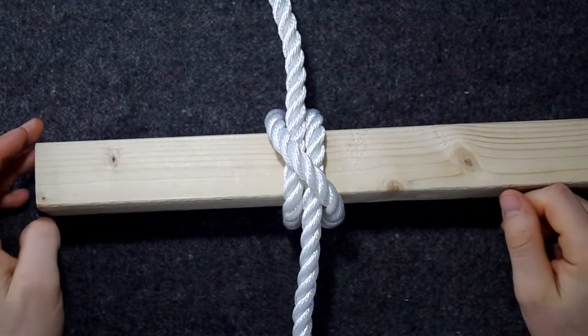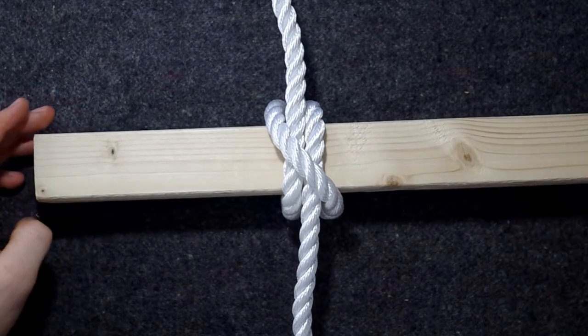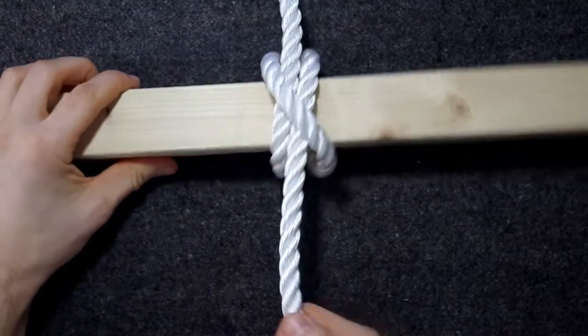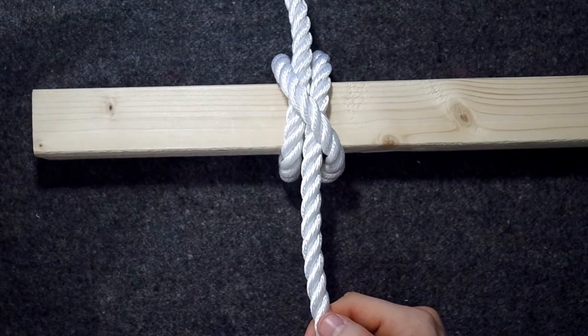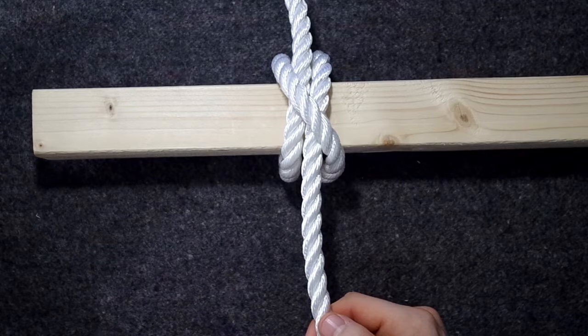It's useful for attaching ropes to round things, for example if you have a fender on a boat. A fender is an air-filled bubble that you would put between boats so that they don't bump into each other.